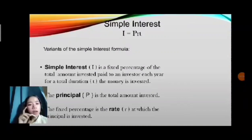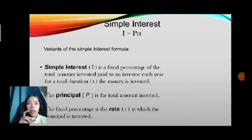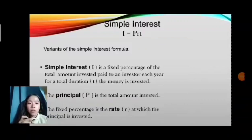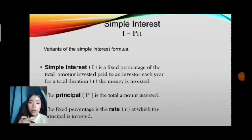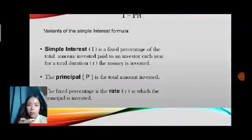Simple interest. The formula for simple interest is I equals PRT. Simple interest is a fixed percentage of the total amount invested, paid to an investor each year for a total duration T, the time the money is invested. The principal P is the total amount invested, and the fixed percentage is the rate at which the principal is invested.